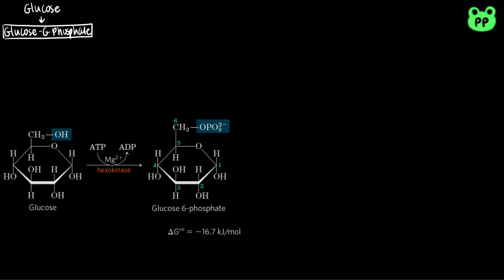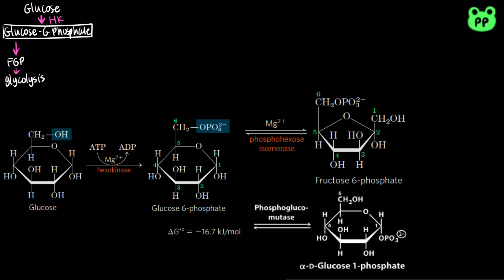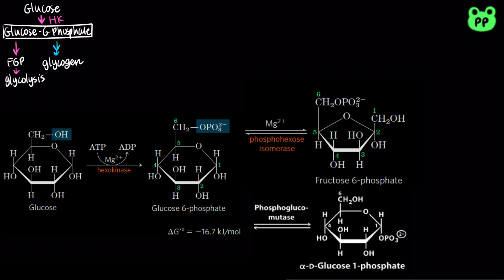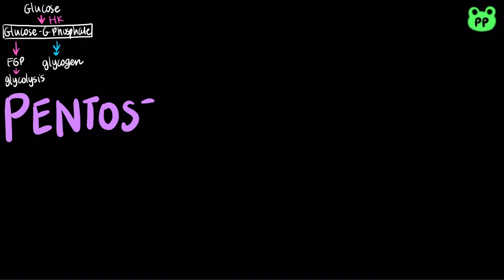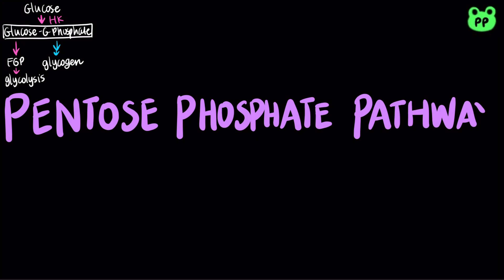The first step of glycolysis involves the phosphorylation of glucose, forming glucose 6-phosphate, which has three main paths. It can be converted to fructose 6-phosphate and continue with glycolysis. It can also be converted to glucose 1-phosphate and stored as glycogen. The third alternative fate is the oxidation of glucose 6-phosphate to pentose phosphates by the pentose phosphate pathway, also called the phosphogluconate pathway or the hexose monophosphate pathway.